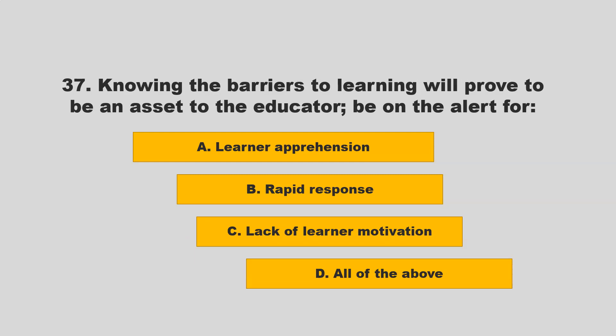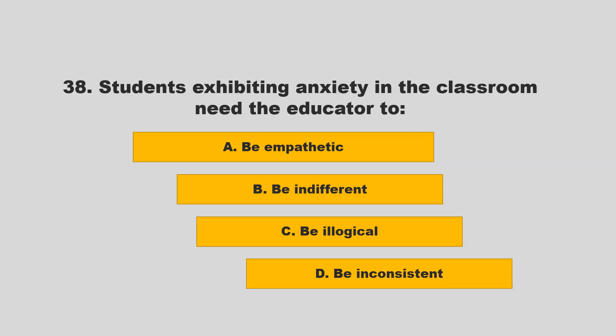Knowing the barriers to learning will prove to be an asset to the educator. Be on the alert for: A) learner apprehension; B) rapid response; C) lack of learner motivation; D) all of the above. If you chose D — all of the above — you are correct.